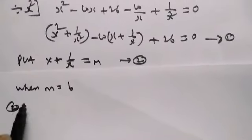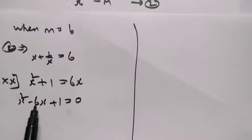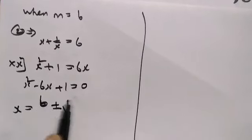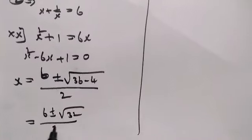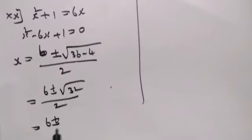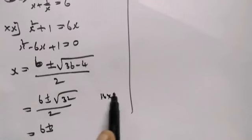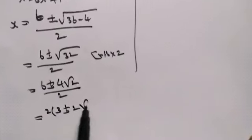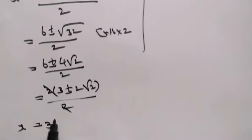When m equal to 6, x plus 1 by x equal to 6. Multiplying by x on both sides: x squared plus 1 equal to 6x. Rearranging: x squared minus 6x plus 1 equal to 0. Applying quadratic formula: x equal to minus b plus or minus square root of b square minus 4ac by 2a. So x equal to 6 plus or minus square root of 36 minus 4 which is 32, by 2. This simplifies to 6 plus or minus 4 root 2 by 2, so x equal to 3 plus or minus 2 root 2.